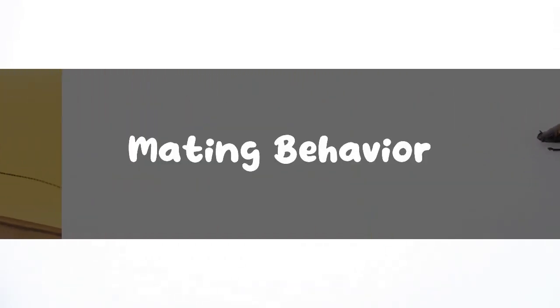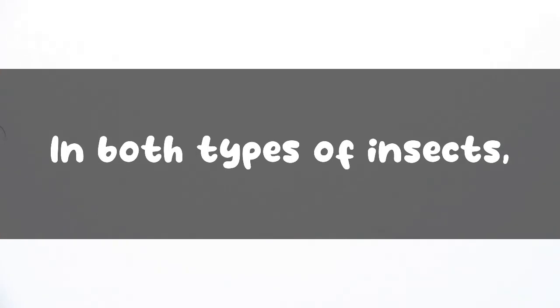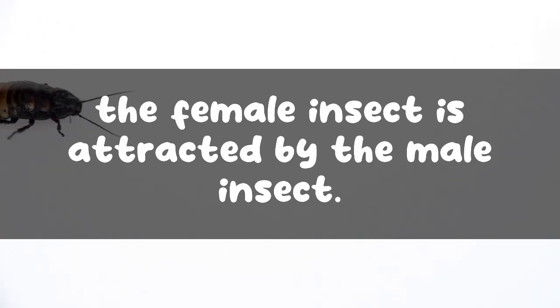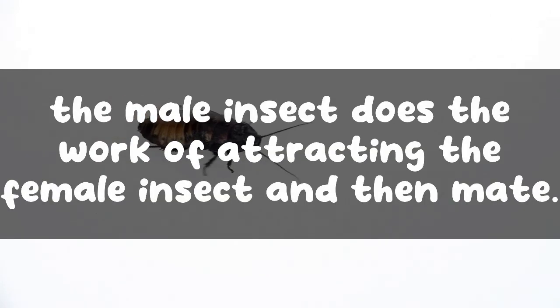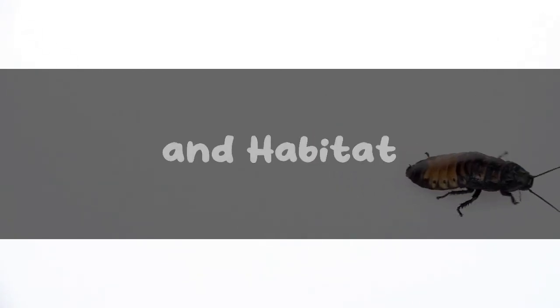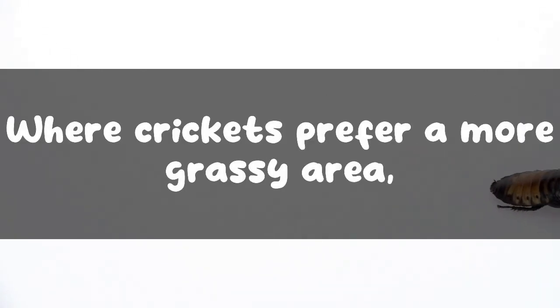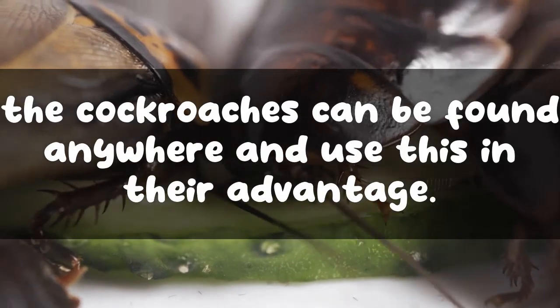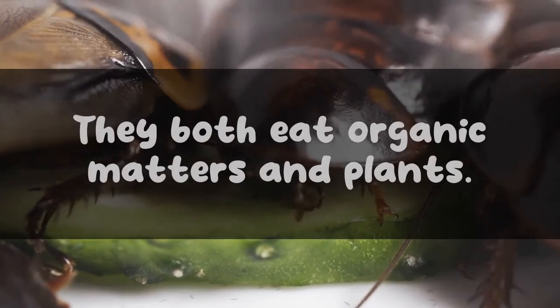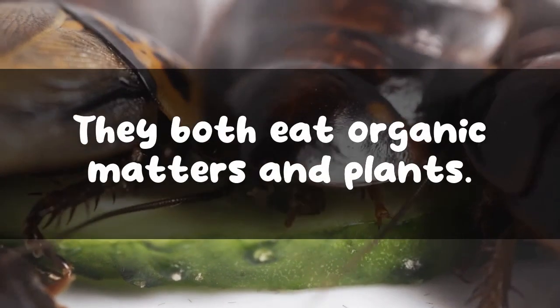Mating behavior: In both types of insects, the female insect is attracted by the male insect — the male does the work of attracting the female and then they mate. Food and habitat: Where crickets prefer a more grassy area, cockroaches can be found anywhere and use this to their advantage. They both eat organic matter and plants.